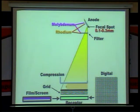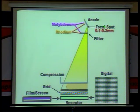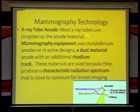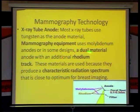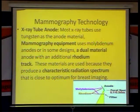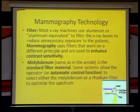When taking a digital mammography, three things play a very important role: the anode, the filter, and the focal spot. For the tube anode, most X-ray tubes use tungsten, whereas mammographic equipment uses molybdenum or sometimes rhodium as a dual material for the tube anode, producing a characteristic radiation spectrum which is classical for digital mammography.